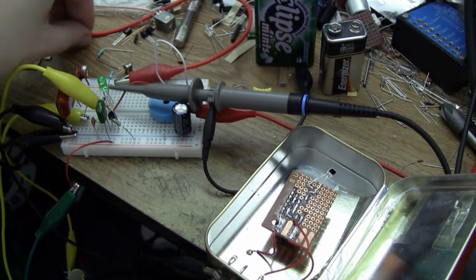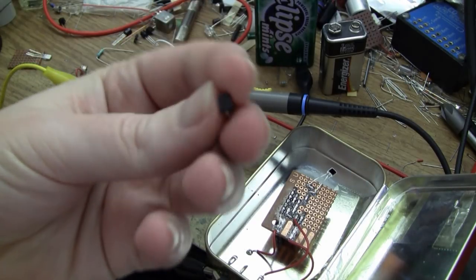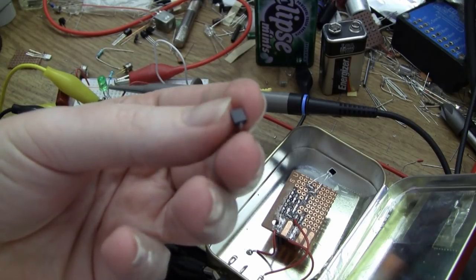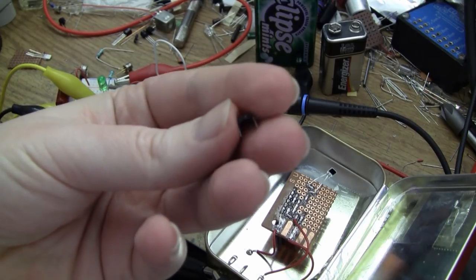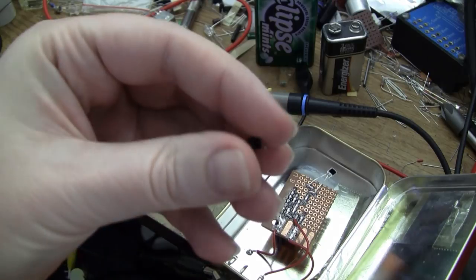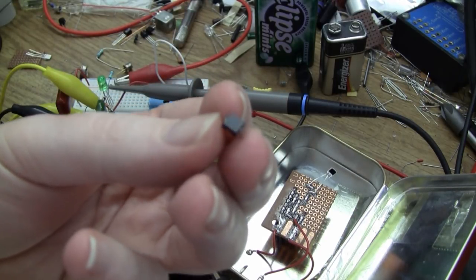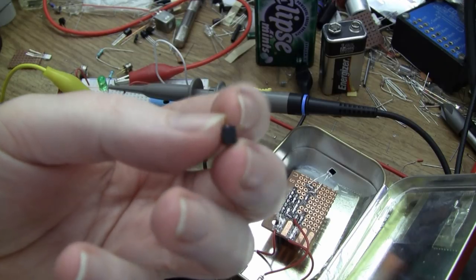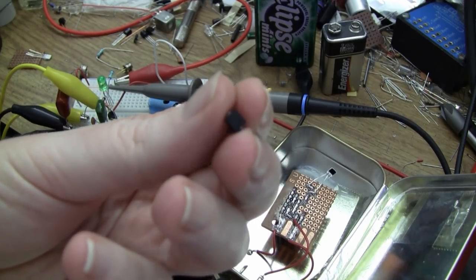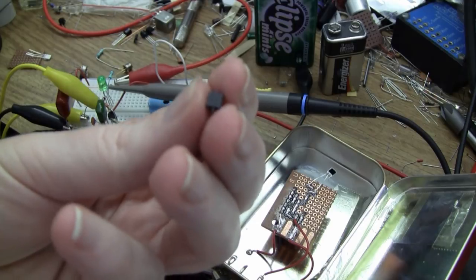Even these little infrared photodiodes, which is the same opaque version of the BPW34, work quite well. As a matter of fact, this device in particular seems to work better than some of the other devices that I've tried. I think that the die is slightly smaller, so there's less capacitance and less noise.